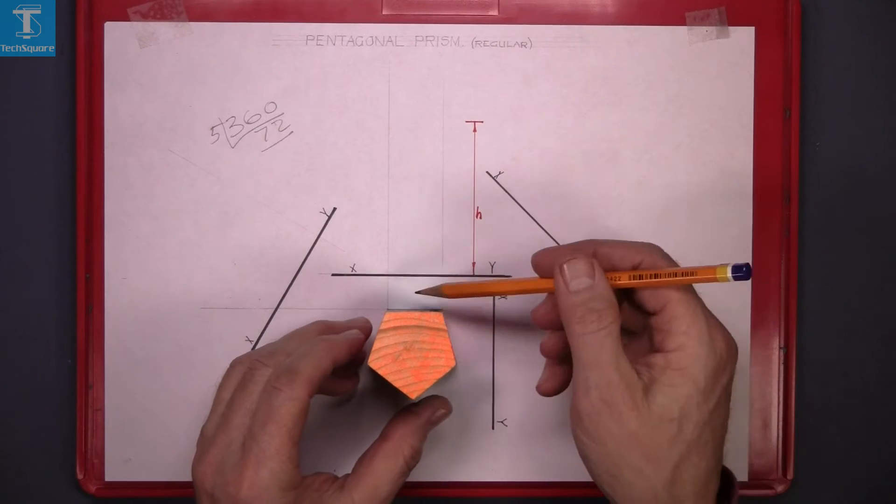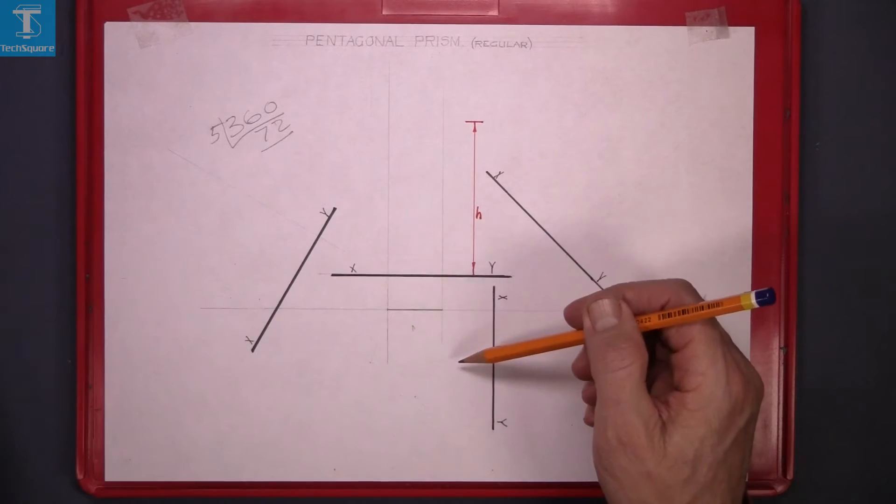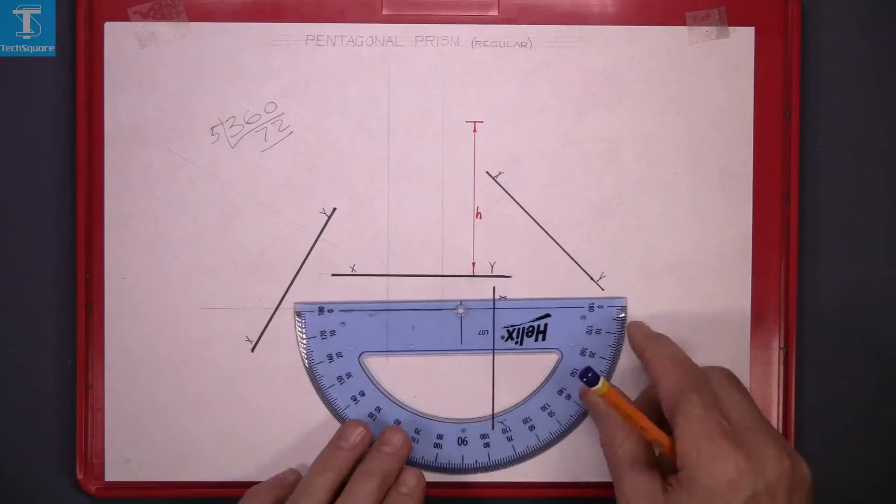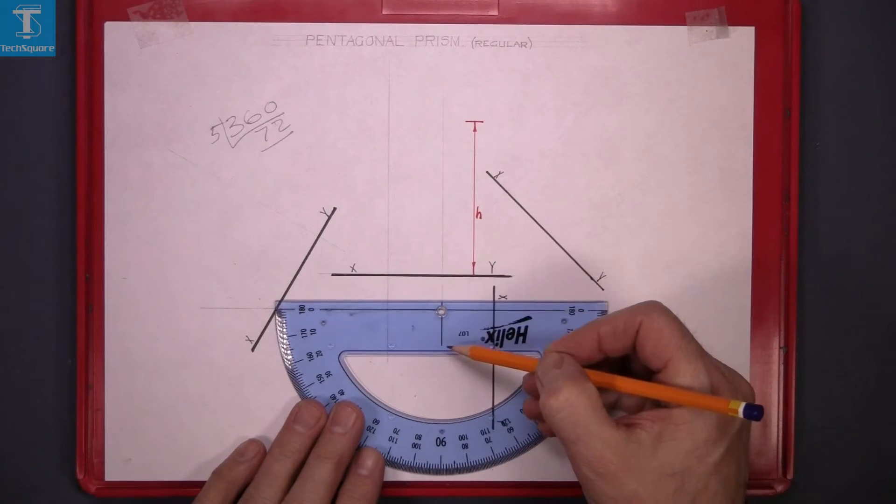So that's the pentagon the way we want it drawn. We have to come down at an angle of 72 degrees. Set the protractor along the line and along this line.